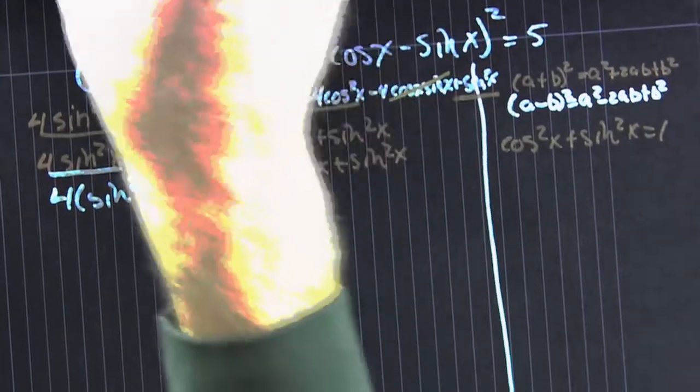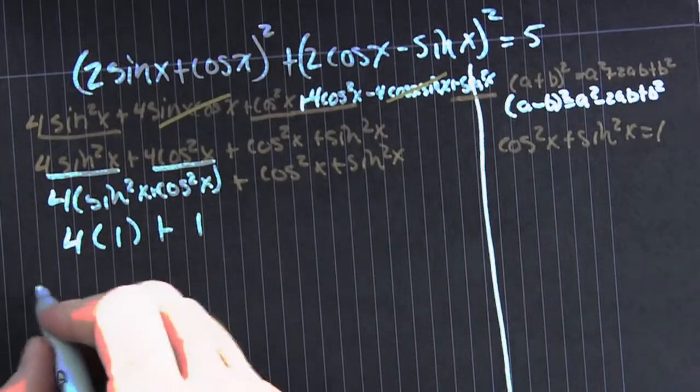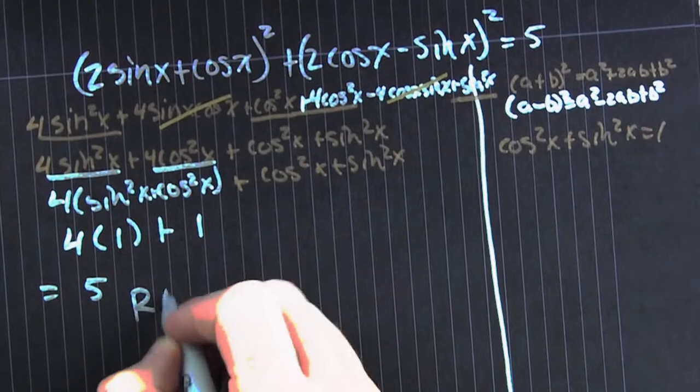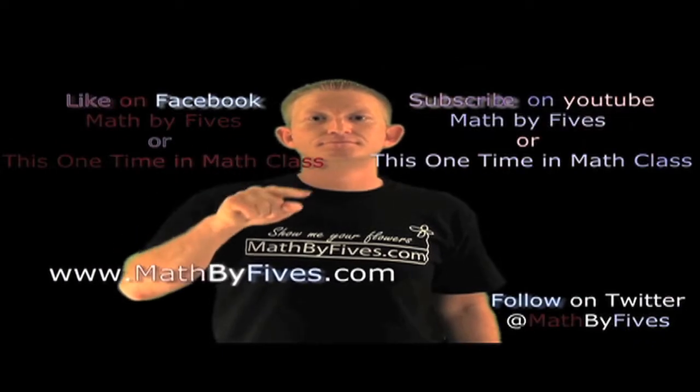So, we evaluate each one of those. And we have 4 times 1, plus 1. That's the right-hand side. This one time in math class? This one time in math class? Real stories from the classroom.